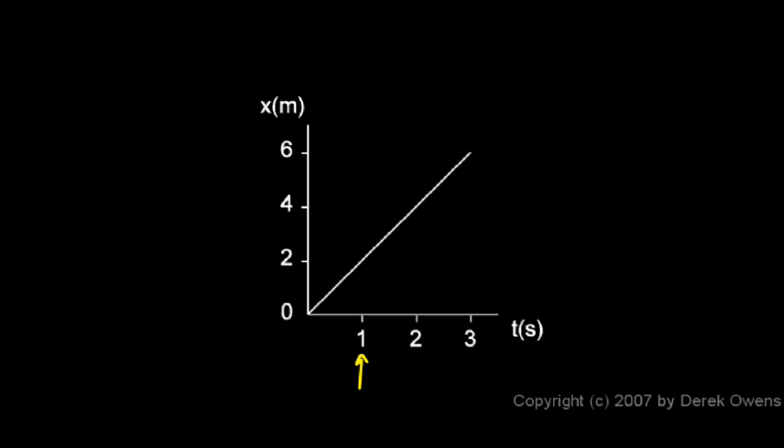For example, at this time t equals 1, that's this point on the graph, it was at position x equals 2 meters. And at this time t equals 2, it was at position x equals 4 meters. And at this time t equals 3, it was at position x equals 6 meters.